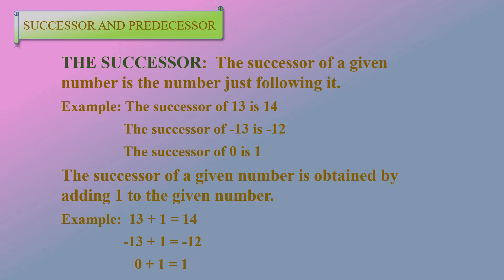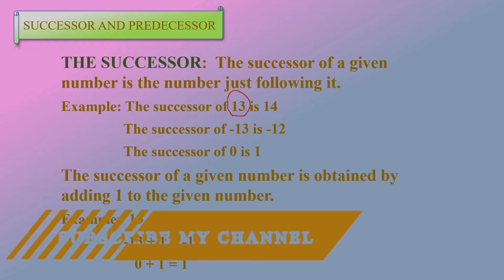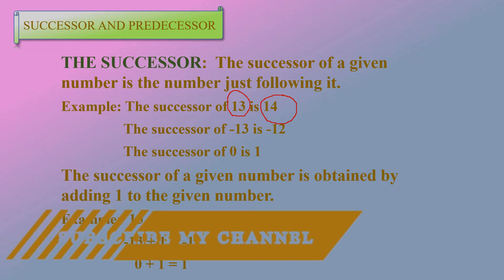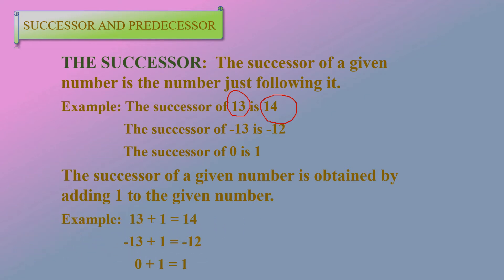The successor of a given number is the number just following it. Suppose 13 is the given number. The next number is 14. 14 is the number just following the given number 13, so 14 is called the successor of 13.